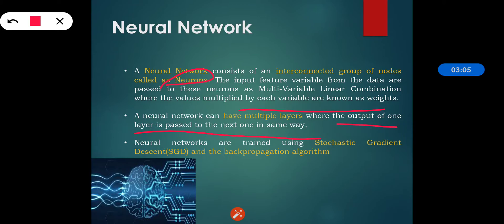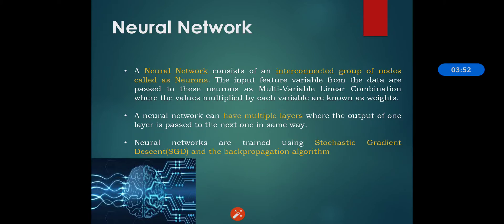Neural networks are trained using stochastic gradient descent, called SGD, and the back propagation algorithm. SGD is a popular algorithm for training a wide range of models in machine learning, including logistic regression and graphical models. The back propagation algorithm is a standard algorithm used for training artificial neural networks.